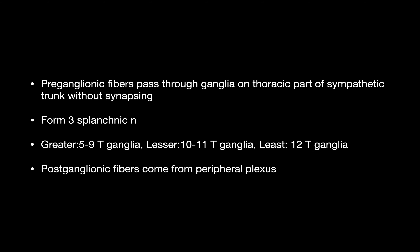The preganglionic fibers pass through the ganglia on the thoracic part of the sympathetic trunk without synapsing. Instead they form the three splanchnic nerves: the greater, which are the T5 to T9 thoracic ganglia; the lesser, which is T10 to T11; and the least, which is the T12 thoracic ganglia. The postganglionic fibers come from the peripheral plexus.